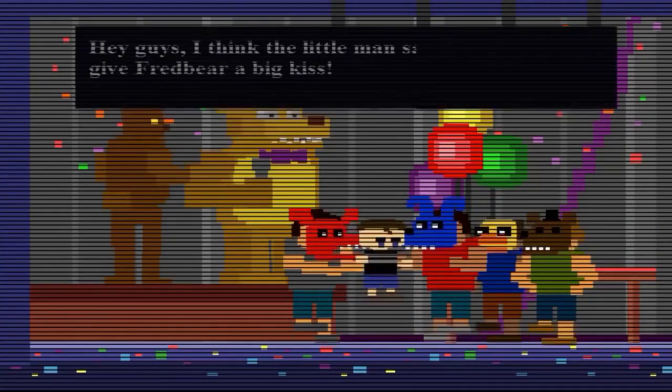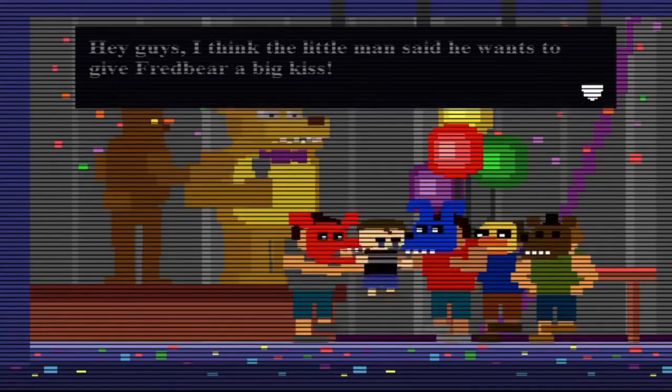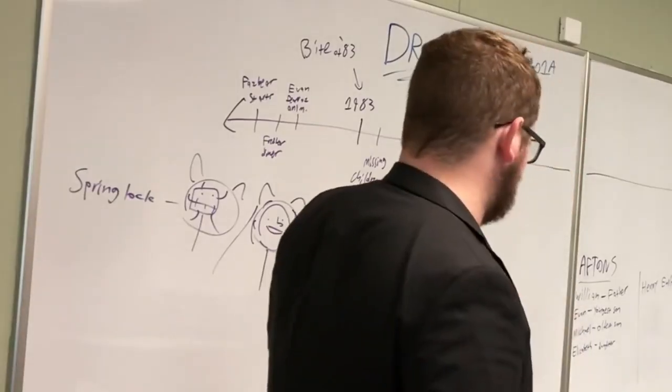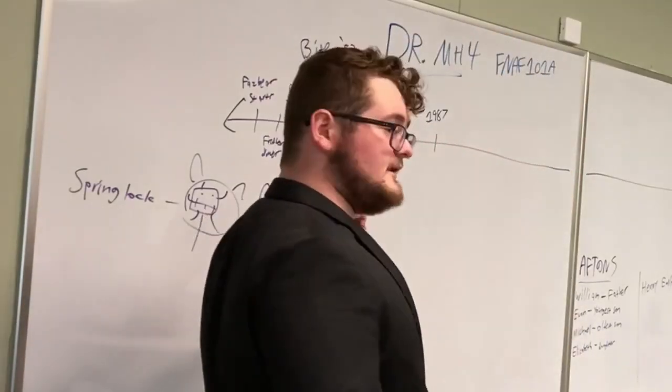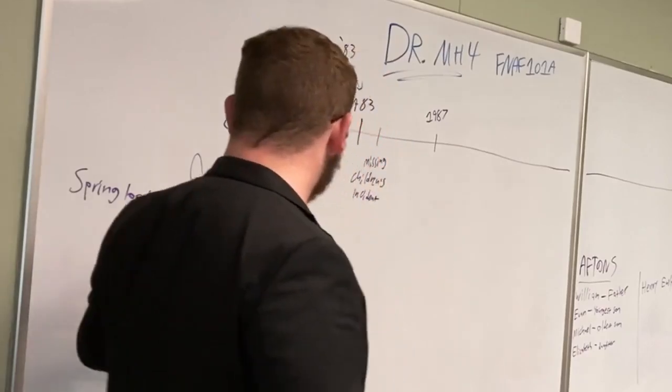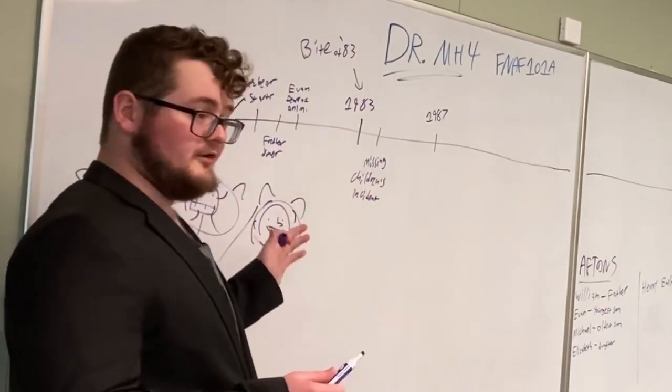And they say, hey, Fredbear wants to give Evan a big old kiss. But what they don't know is that the springlocks in the springlock suits are prone to moisture. So if they get too wet or if they move around too much, then you get springlocked.